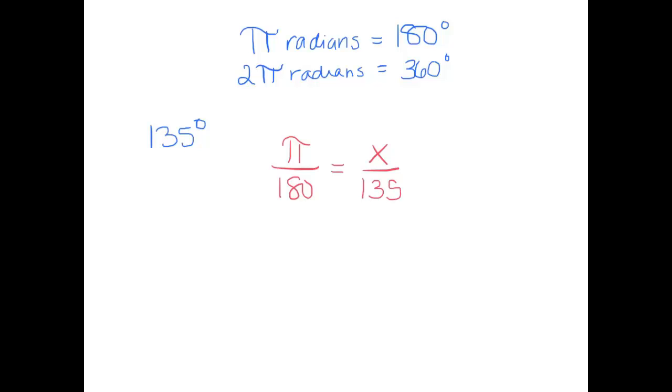And we know that there's four different ways to set up a proportion, so as long as you are consistent—I like to do my radians on this side and my degrees on this side, it doesn't really matter—I'm just going to solve for x. So I get 135π equals 180x. Divide by 180, and now I'm going to simplify 135 and 180.